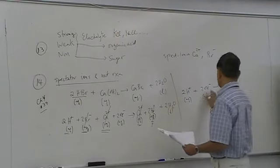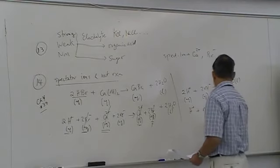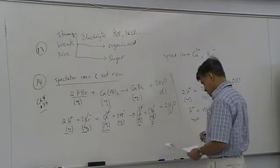You can also, since it's a 2, 2, 2, you can just write it down as H plus plus OH minus, giving H2O. So this is the net ionic reaction.